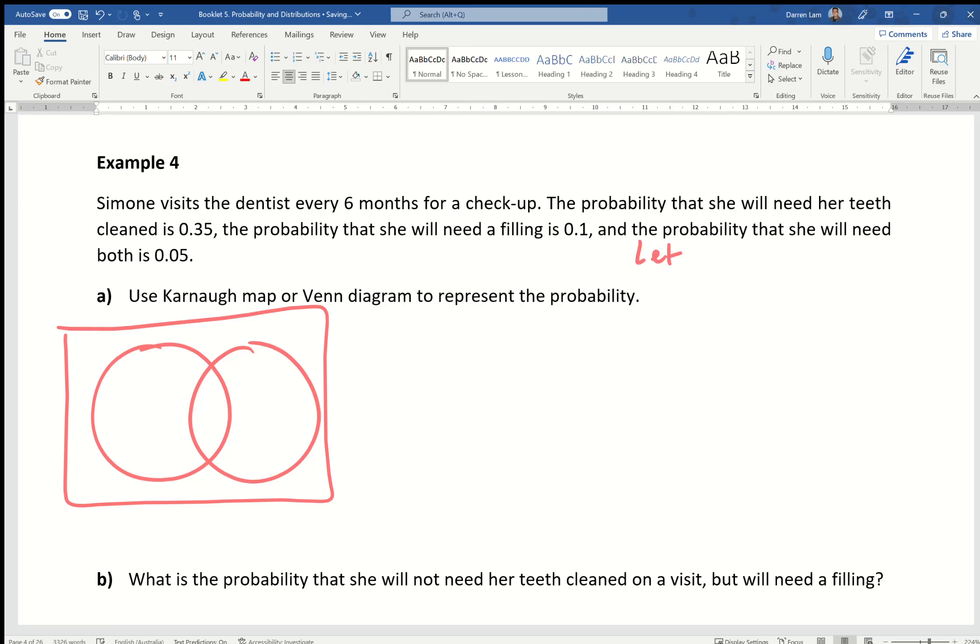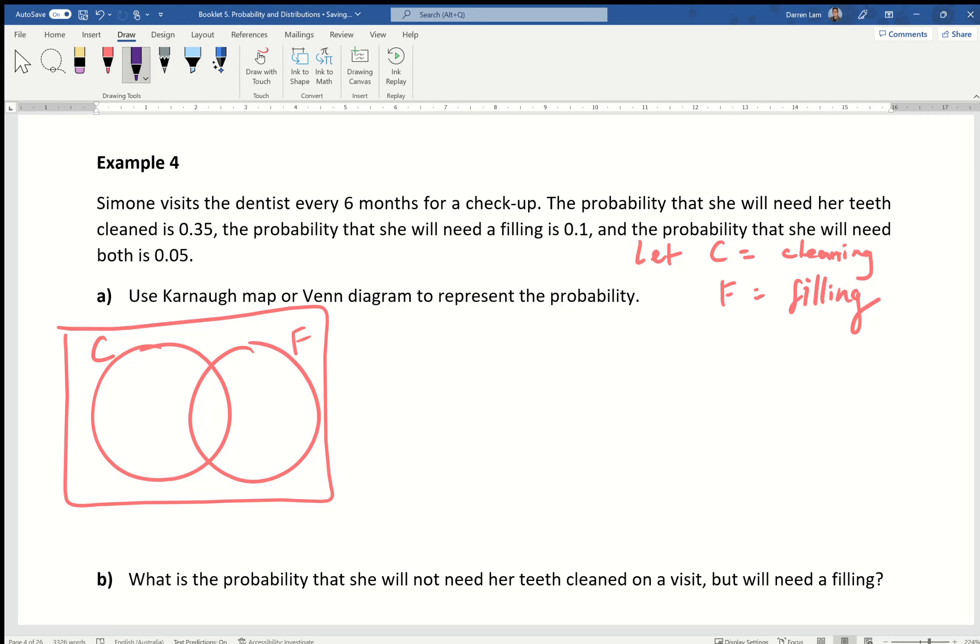Another thing that students always forget is to write their definitions. Let C equal to cleaning teeth, or just write cleaning, and then write F equals filling. The probability that your teeth gets cleaned is 0.35. Where on my Venn diagram is that? If I was to shade it in, where on the Venn diagram are teeth cleaning being 0.35? Is it just this area? No, it's also all of this. That's 0.35. At this stage I don't like writing the number 0.35 because I might mistake myself down the line.